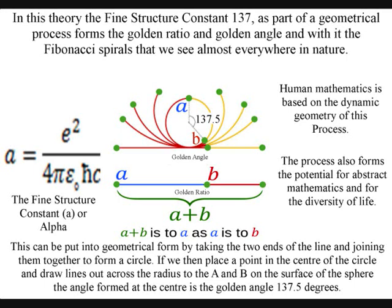If we then place a point in the center of the circle and draw lines out across the radius to the A and B on the surface of the sphere, the angle formed at the center is the golden angle, 137.5 degrees.